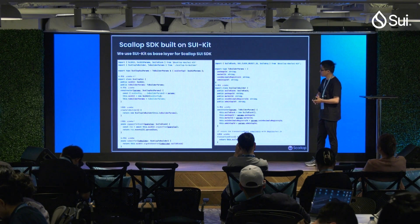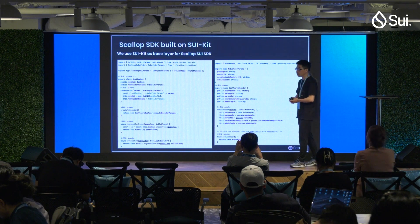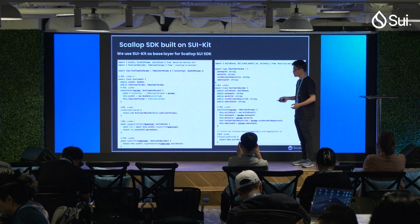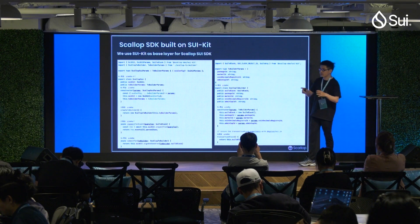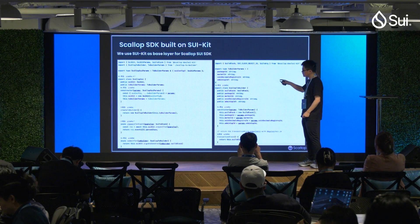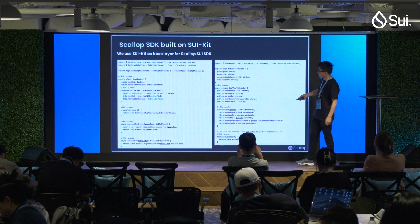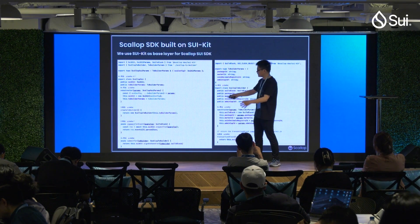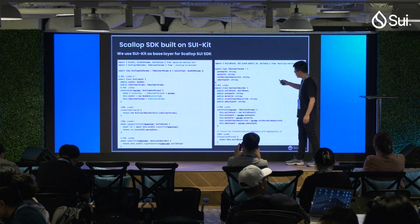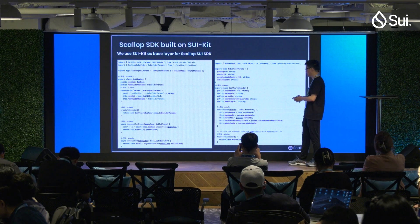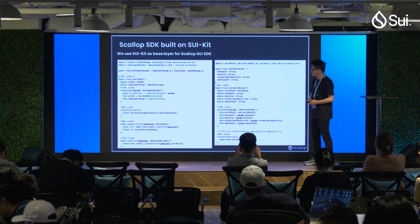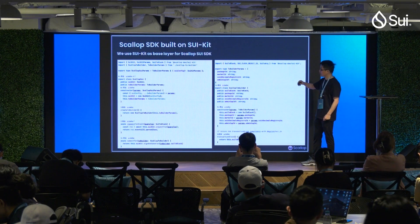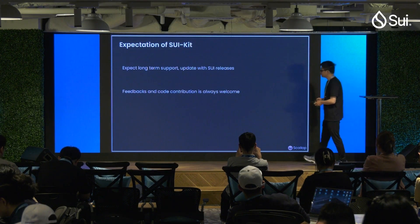We have already started using SuiKit to build our own SDK for Scallop. Our expert users want to integrate Scallop's operations into their own workflows — for example, taking coins from other places, then lending or borrowing on our platform, then doing something else. We integrate SuiKit into our SDK to support this. For normal users we provide a simple core-and-send approach, but for expert users we provide an advanced way to export a transaction builder so they can integrate programmable parts into their own workflow.